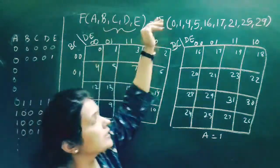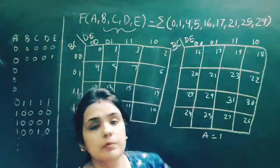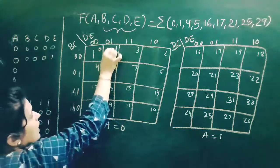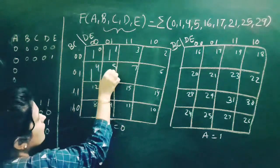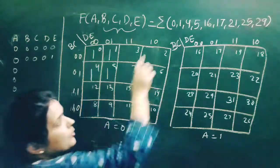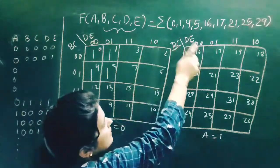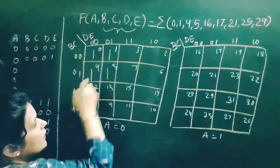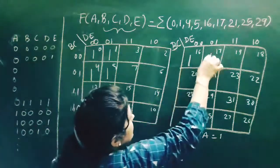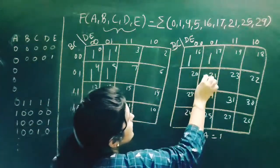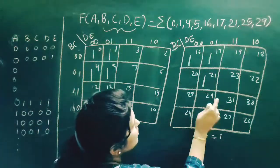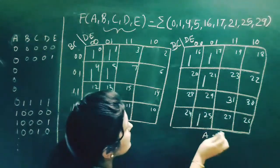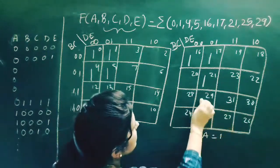F equals 1 on the occurrence of the following minterms: 0, 1, 4, 5, 16, 17, 21, 25, and 29. So I write a 1 corresponding to minterm positions 0, 1, 4, 5 in the first K-map, and 16, 17, 21, 25, and 29 in the second K-map.